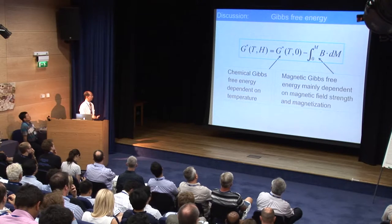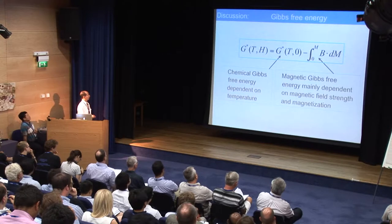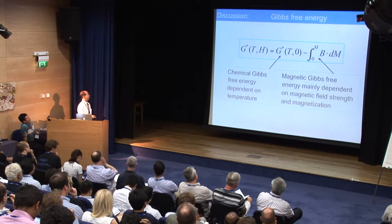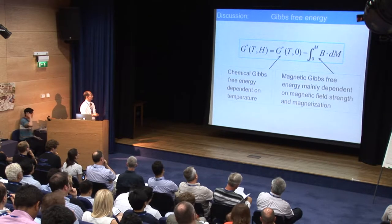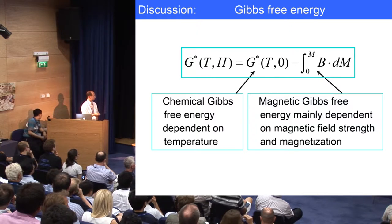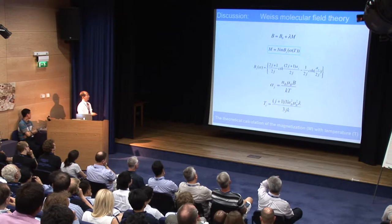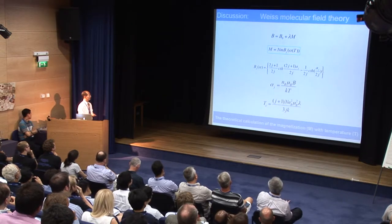Why does the high magnetic field change the precipitation sequence of austenoid carbides and the concentration of iron and other magnetic atoms? We use the Gibbs free energy to describe this phenomenon. In the condition of the high magnetic field, we have two terms for the Gibbs free energy: the first term is the chemical Gibbs free energy, and the second term is the magnetic free energy. We use the Weiss–Morganov mean-field theory to describe the phase transformation of austenoid carbides.